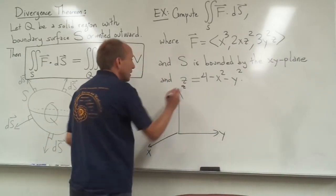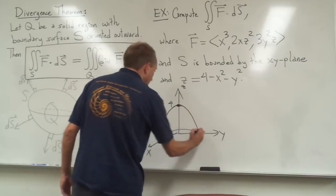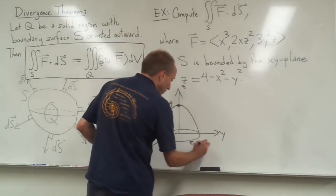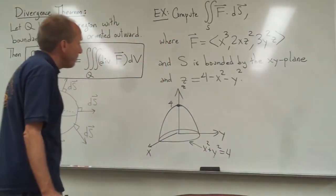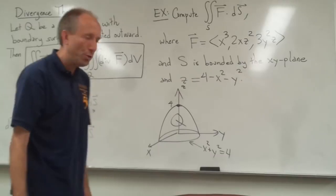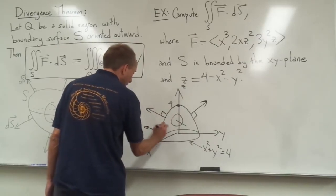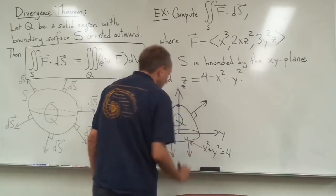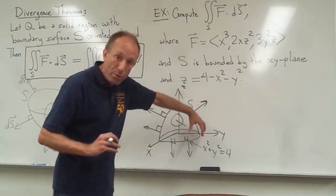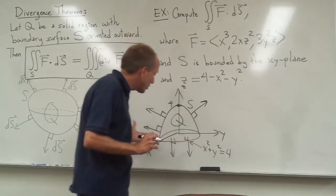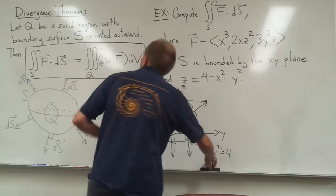Let me draw a picture of the situation. The xy-plane is down at the bottom. This is an upside-down paraboloid — it goes through the z-axis at 4, and then it hits the xy-plane (where z = 0) at the circle x² + y² = 4. So you can see our solid object Q is right there. If we wanted to calculate the flux directly through this closed surface, we would actually have to do two different flux calculations: the flux through the paraboloid and the flux through the disk at the bottom, so that would be a fair bit of work.